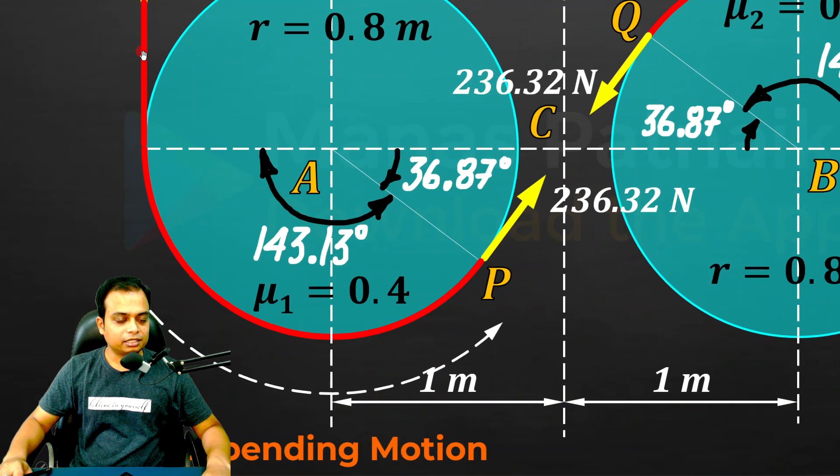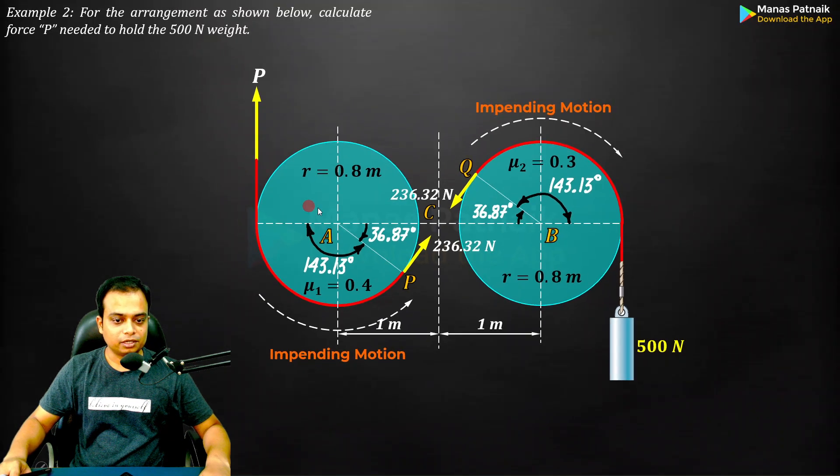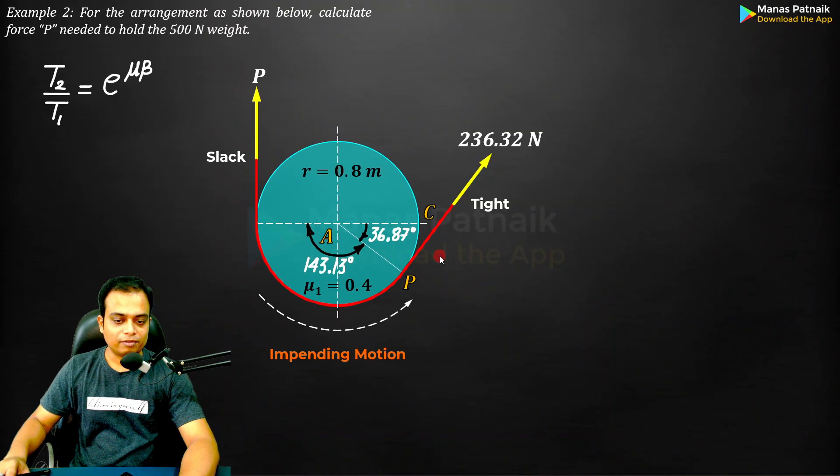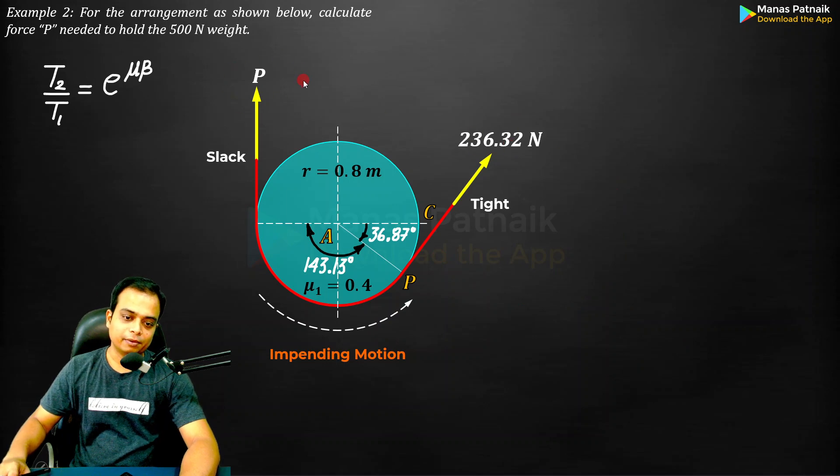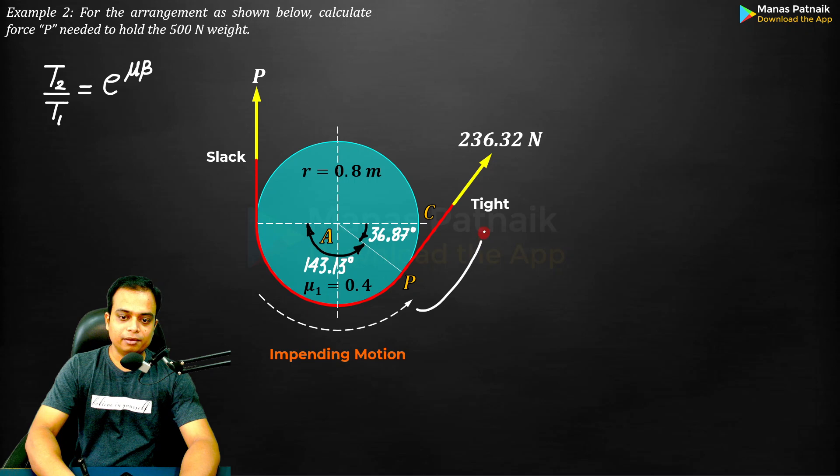Now we are going to look at the free body diagram somewhere here - this much portion of the rope which is in contact with drum A. One value is known: 236.32. This P has to now be calculated. Remember, arrowhead means tight side, arrow tail means slack side.